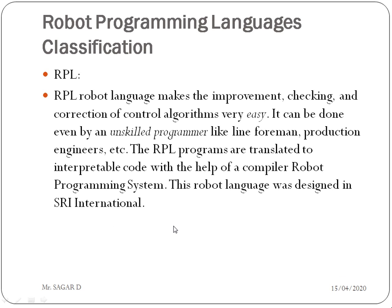The last language is RPL. RPL makes checking and correcting control algorithms very easy, and can be used even by unskilled programmers like foremen or production engineers. RPL programs are translated to interpretable code with the help of a compiler in the robot programming system. This language was designed at SRI International. This concludes Part 1 of Unit 5 of robotics. Part 2 will be discussed next.